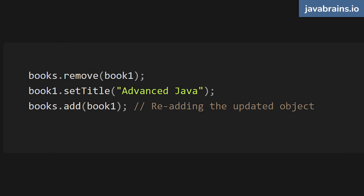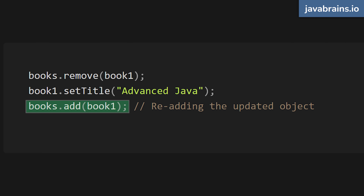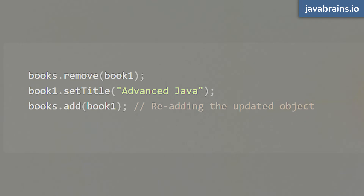If I want to change the book, I do book set dot remove of book one, set the title, and then add it back. I re-add the updated object, and now the new hash code is calculated — that's what determines where this object gets stored in the hash set this time. Be careful when dealing with things that can change in the object instance that ends up in a hash set.